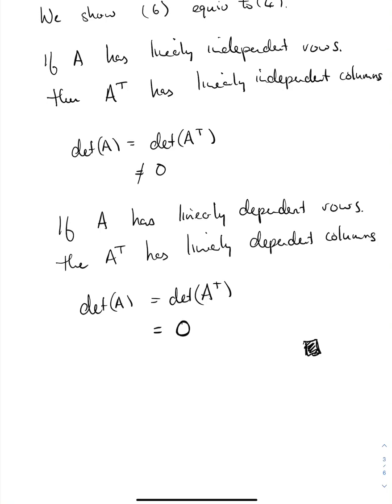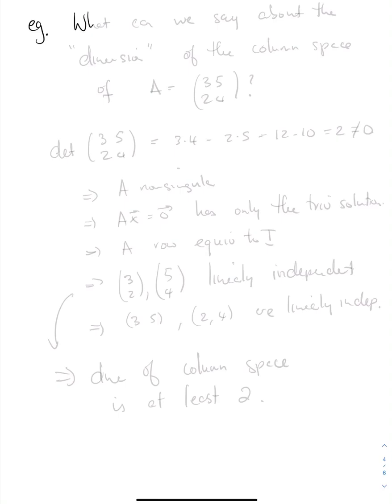Let's look at a little example. So what can we say about the dimension, and I'm going to put dimension in quotes here because we haven't really defined it even though we do have an intuition about what it might mean. What can we say about the dimension of the column space of the matrix A is equal to 3, 5, 2, 4?